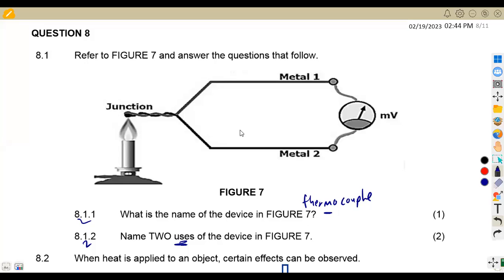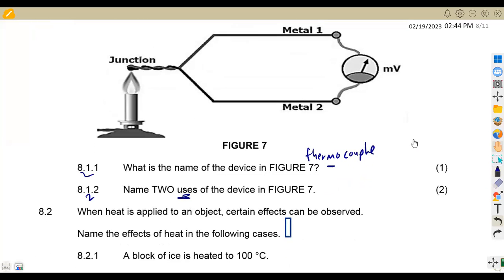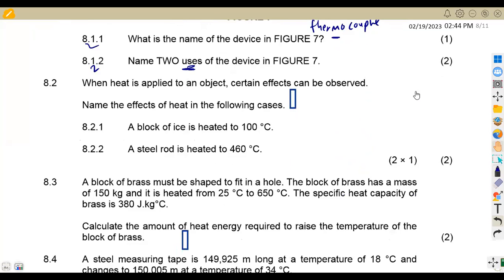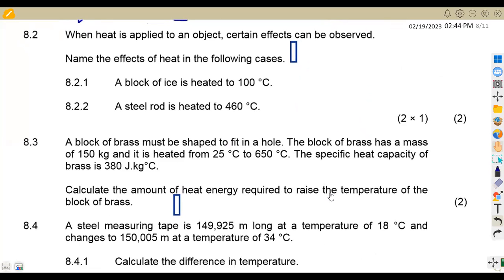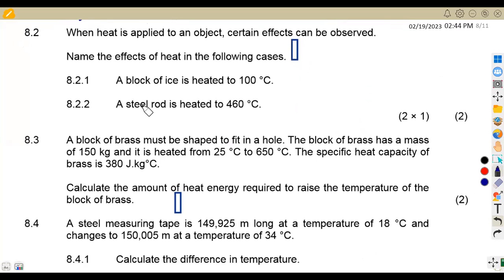Let's move on to 8.2. We are given that when heat is applied to an object, certain effects can be observed. Name the effect of heat in each of the following cases. A block of ice is heated at 100 degrees Celsius. What is going to happen? There is going to be a change of phase. Take note, the question is on the effect of heat. If you are dealing with a steel heated, there is going to be a change of color.